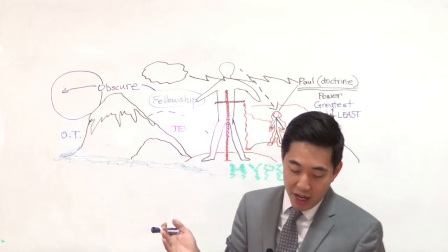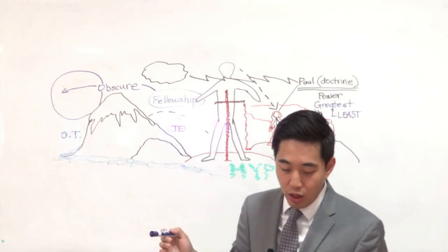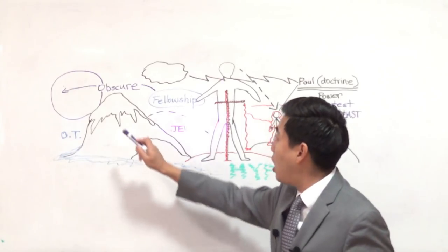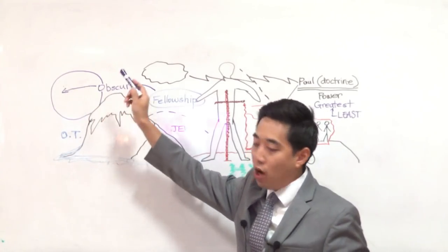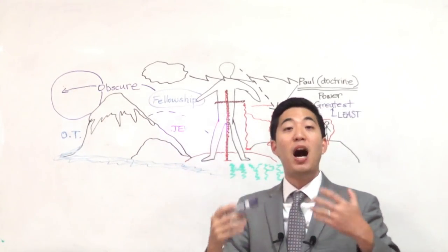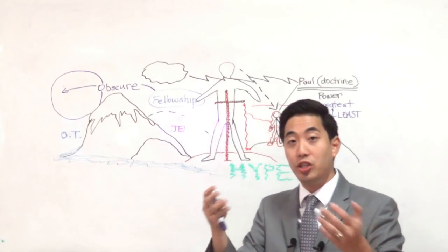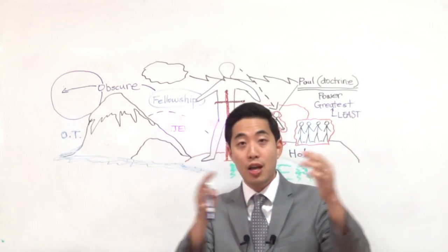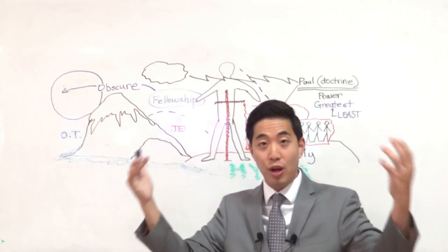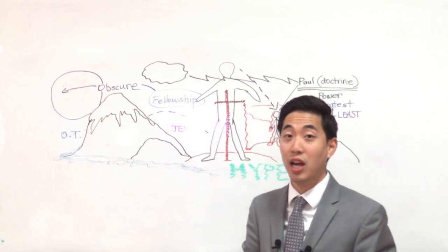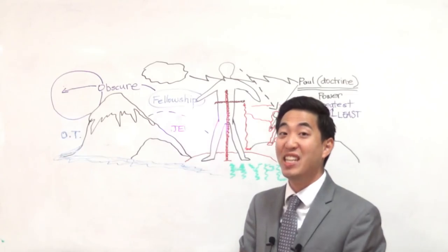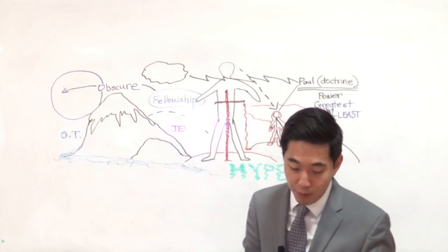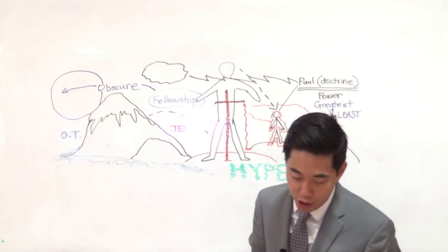Who created all things by Jesus Christ. So God is the one who created all things by Jesus Christ. Notice that Jesus Christ and God the Father, they were in unison together when they created all the universe. So Jesus is God, Jesus is part of the deity of God himself in the creation of the universe.